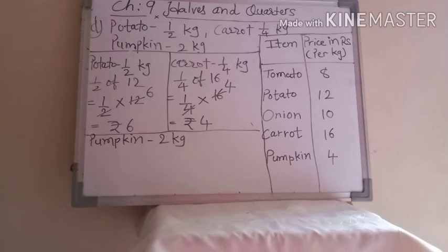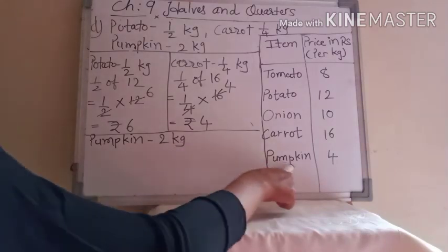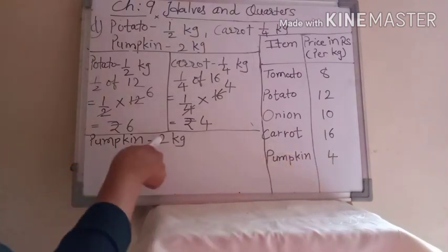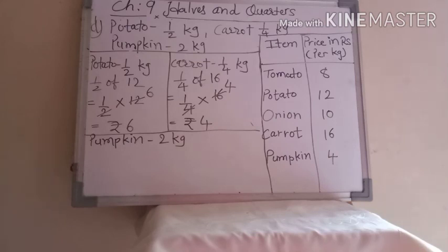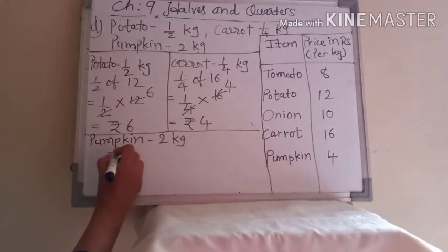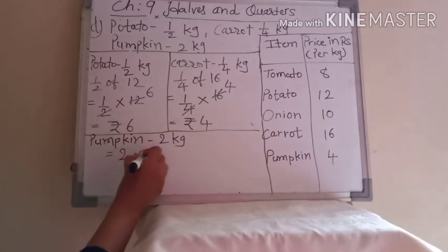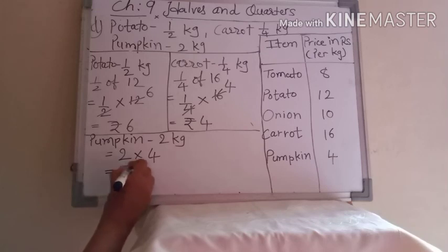Now pumpkin 2 kg. The price of 1 kg pumpkin is 4 rupees. We have to find for 2 kg. 1 kg is 4 rupees, so 2 kg will be 8. You have to multiply: write 2 multiply 4. Two fours are 8. So pumpkin price is rupees 8.